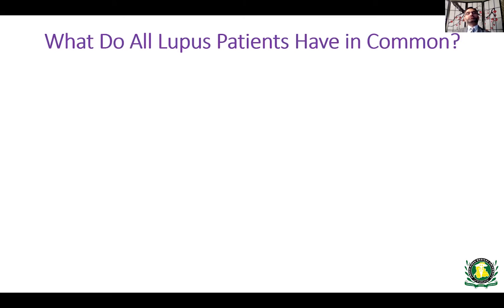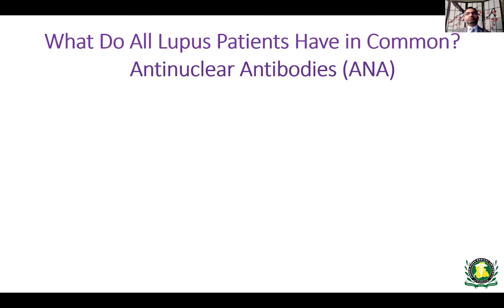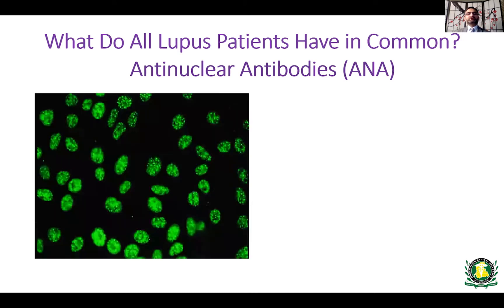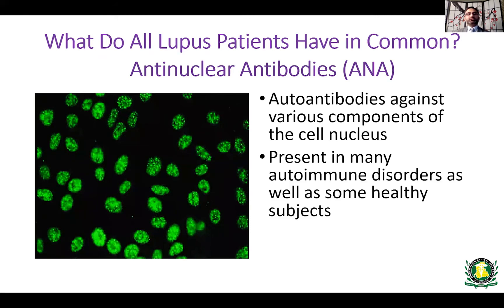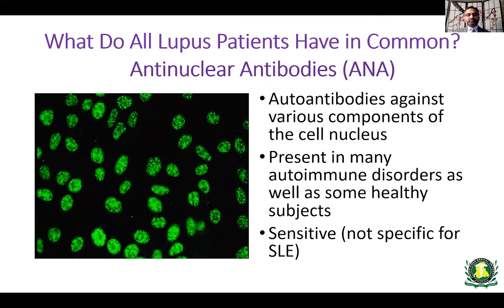What do all lupus patients have in common? The ANA, or anti-nuclear antibody test, is the autoantibodies — antibodies produced by your own body against your own proteins — specifically against various components of the cell nucleus. That's why it's named anti-nuclear antibody. It's present in many autoimmune disorders, but also in some healthy subjects. So it's very sensitive, but it is not specific for lupus. The ANA is present in about 3–4% of normal subjects, but in 95–99% of subjects with lupus.